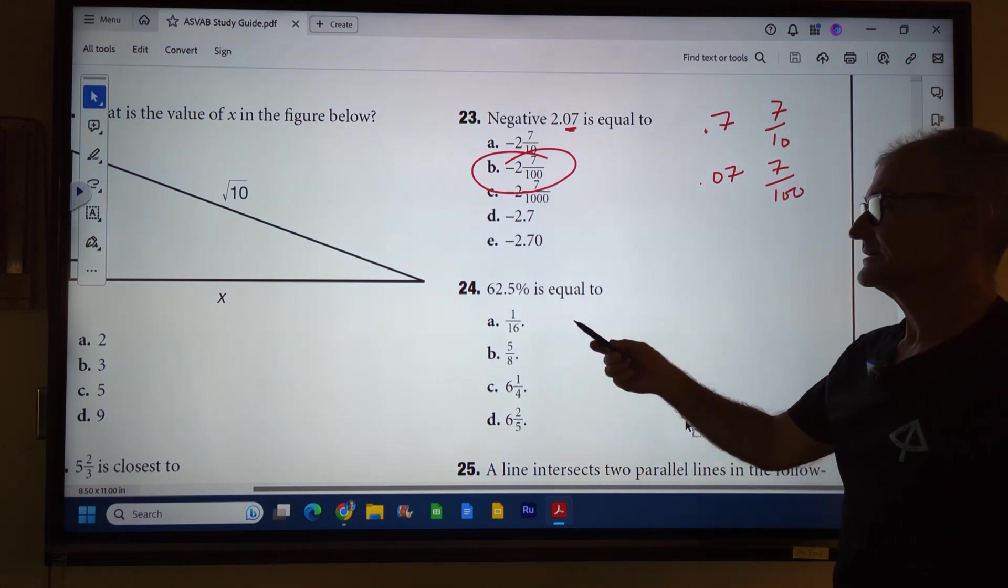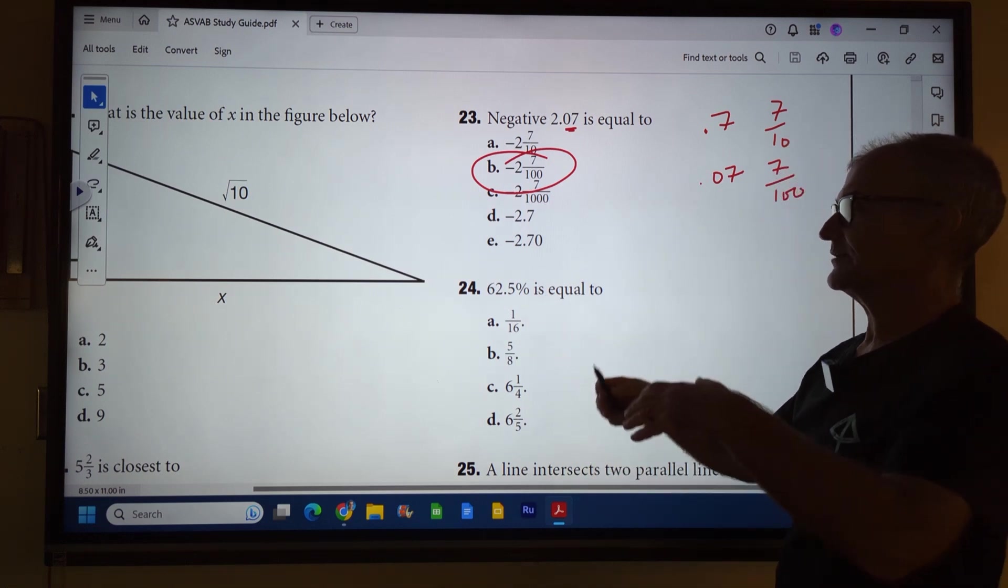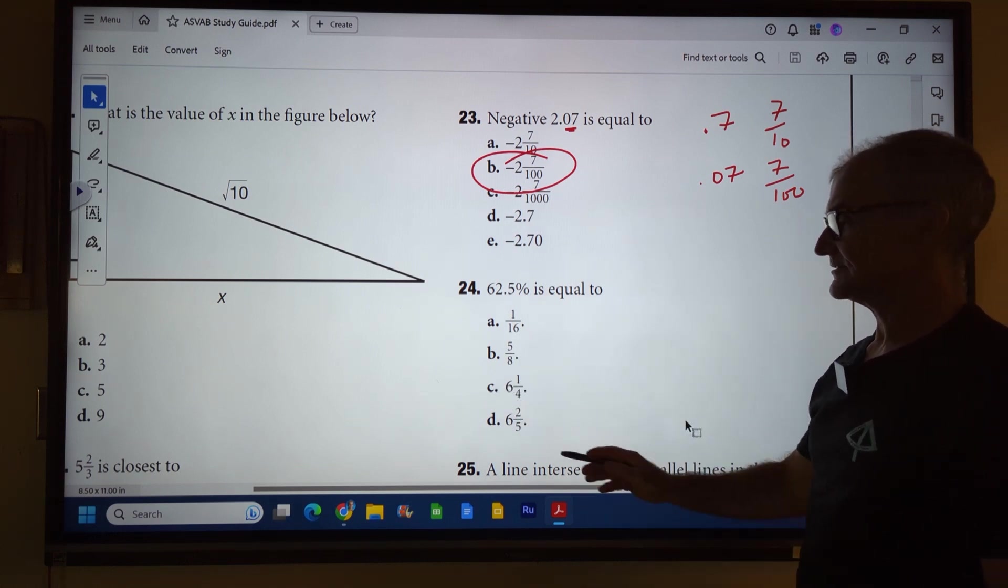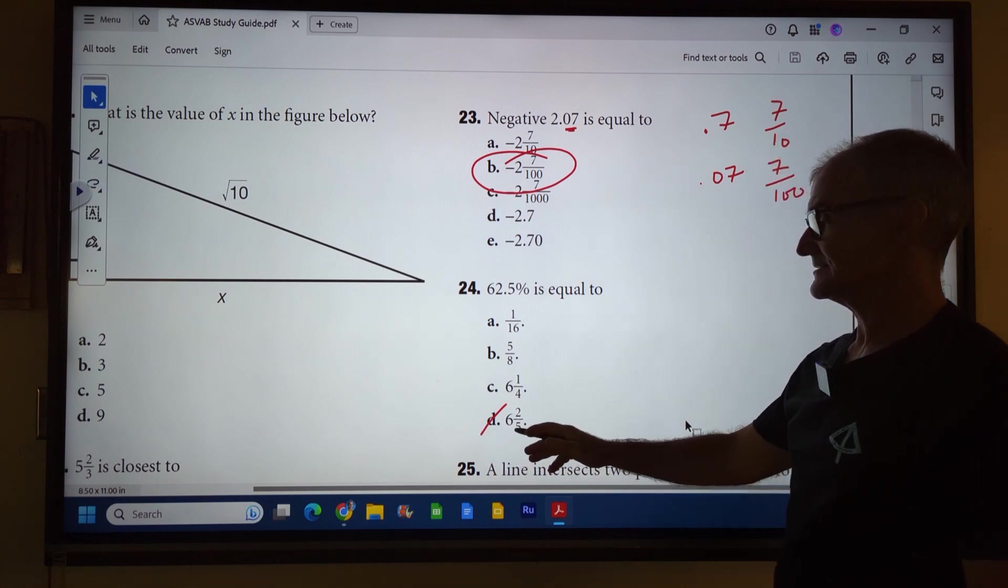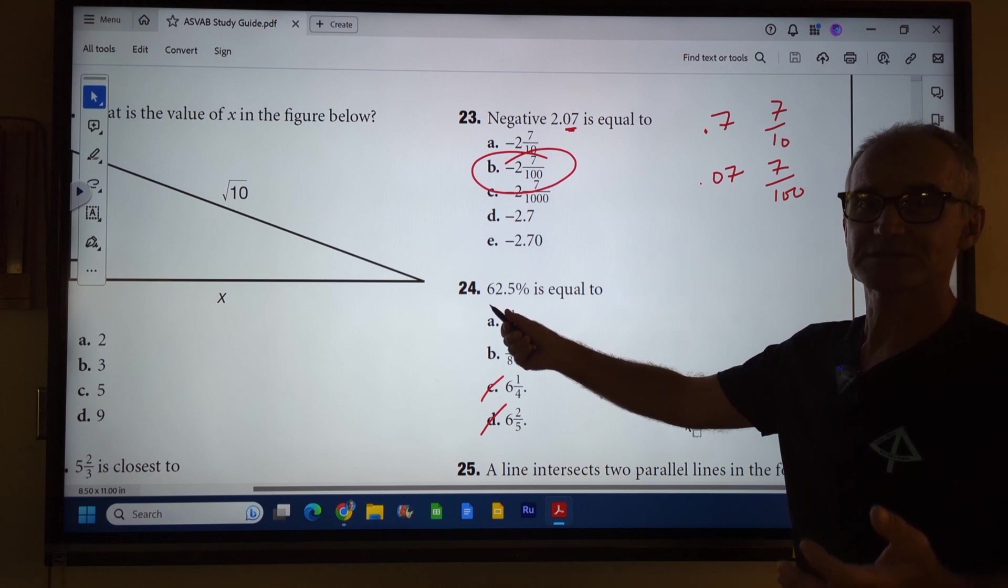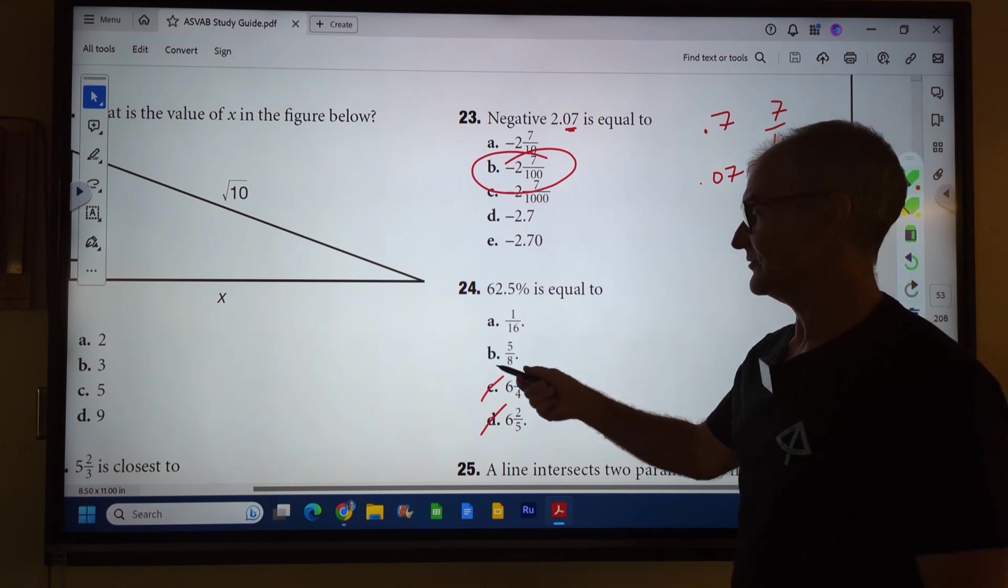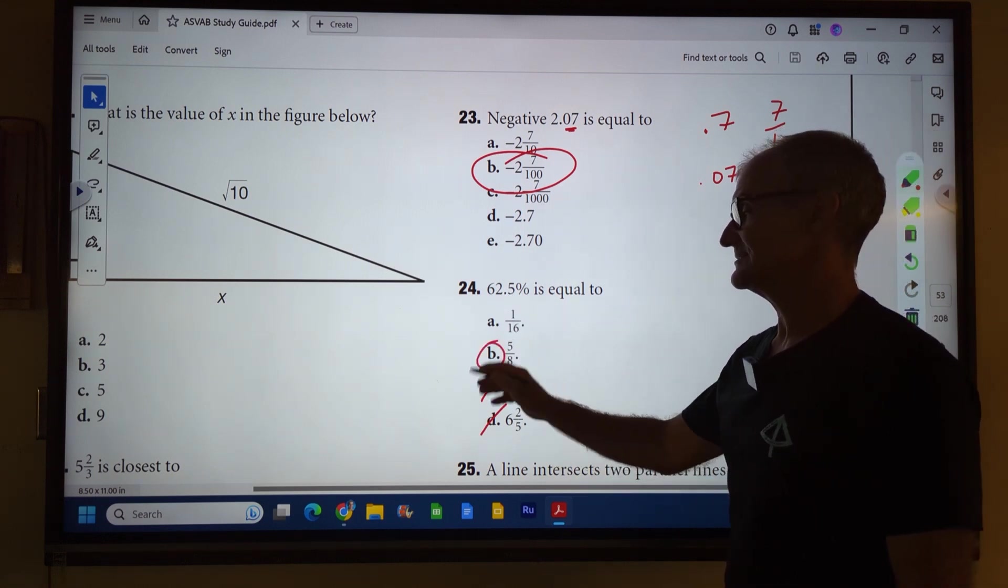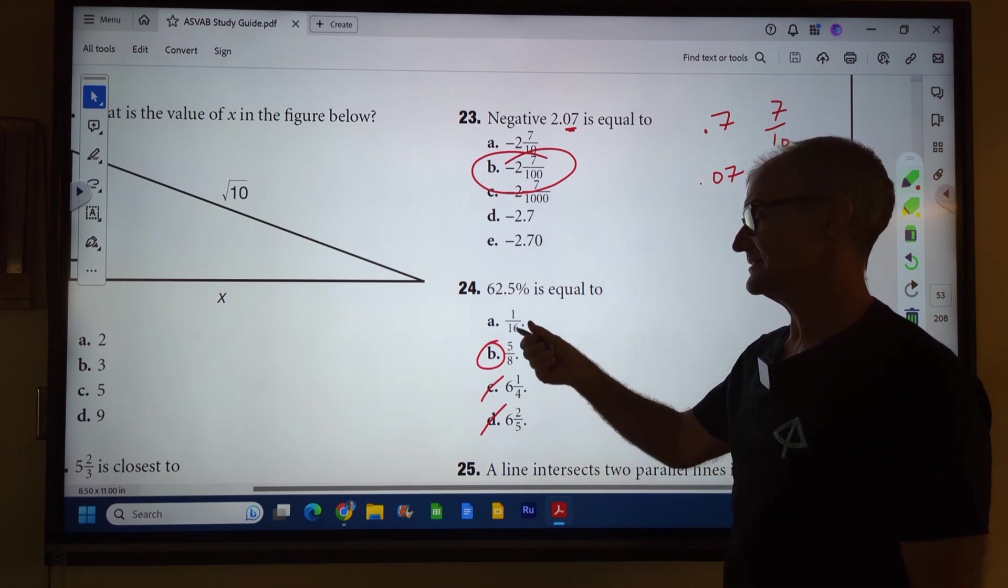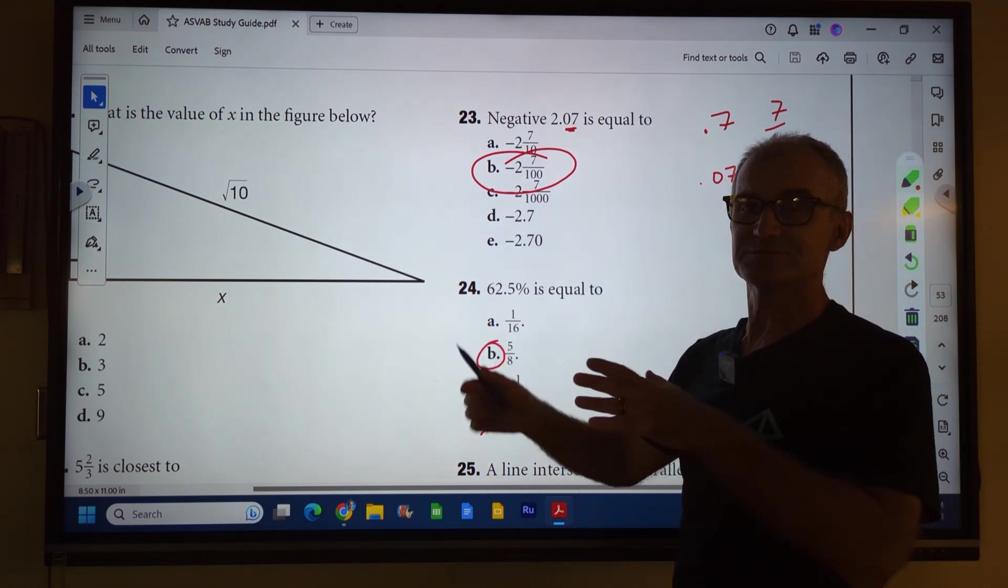Number 24: 62.5% is equal to which fraction? Well, we know this is how much of a hundred, what part of a hundred it is. So first thing I'm going to do is cross out this one, six, and this one, six, because this is less than a hundred percent, so it has to be less than one. So those two don't even make sense. It is greater than a half. Only one of these fractions greater than a half is this one right here. This is a pretty big decimal, more than a half, and this is a teeny little fraction, so it can't be that one.